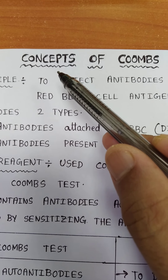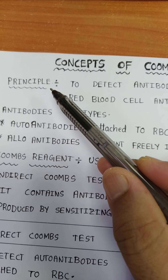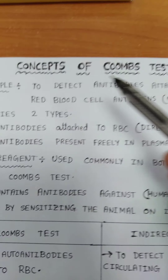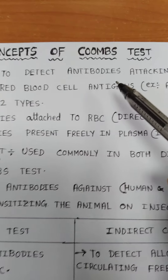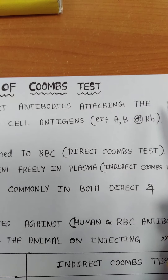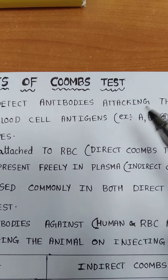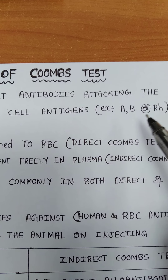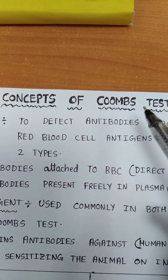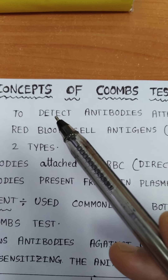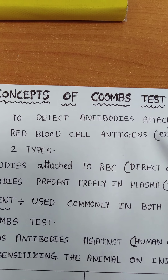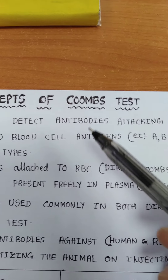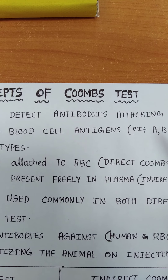The Coombs test is used to diagnose conditions like autoimmune hemolytic anemia and other conditions where antibodies are produced which attack red blood cell antigens, such as A, B, or O antigens. It is used to detect antibodies generated in these conditions — these are autoantibodies or alloantibodies generated in conditions like autoimmune hemolytic anemia.